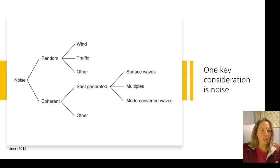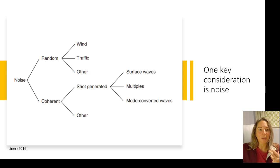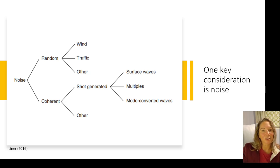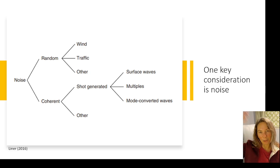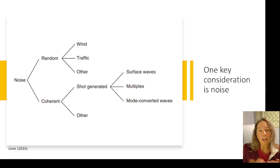In seismic acquisition, we tend to encounter two main types of noise. We have random noise, which can come from things like wind, traffic, and other environmental factors. We also have coherent noise, which shows more consistent patterns and comes from either shot-generated sources or other systematic sources. Shot-generated coherent noise includes surface waves from ground roll, multiples where you have repeated reflections, and mode-converted waves. In terms of other coherent noise, in one acquisition I did in Oklahoma, we got noise from power lines about 30 feet above where we were acquiring data. Understanding these noises is crucial because we have to use different strategies for different types of noise during processing to remove them.